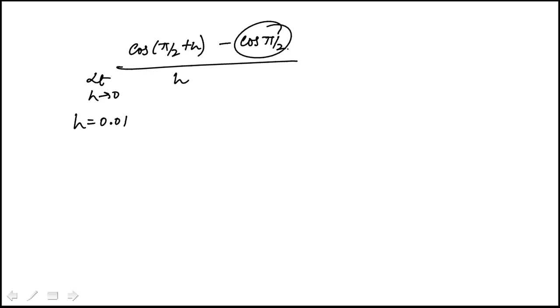Now cosine π/2, that's 0. So this is cosine. What you would do is compute this, divide by 0.01. I'm just going to use the calculator. And this I obtain minus 0.00999.